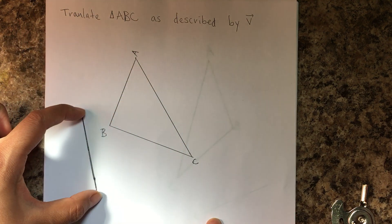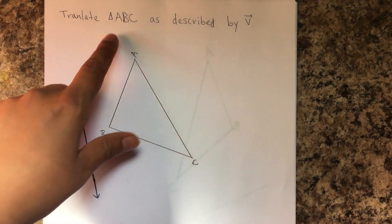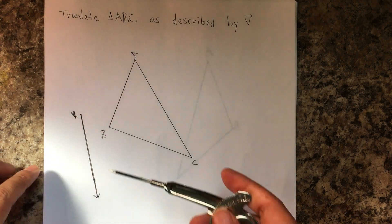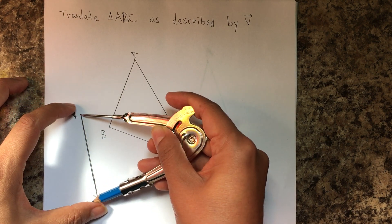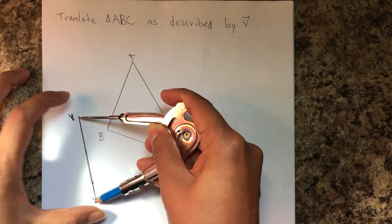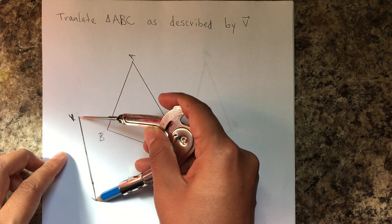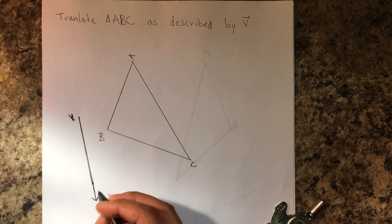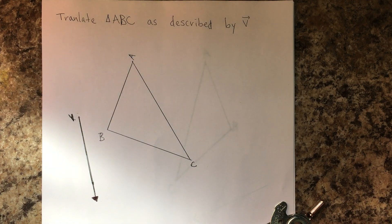These are the steps you have to take to translate triangle ABC as described by the vector given. The first step is to measure the vector. One very important thing is that you measure all the way to the tip of the arrow on the vector — to the tip. Even if you have something like this, it's not to the middle of the little arrow but to the very tip.